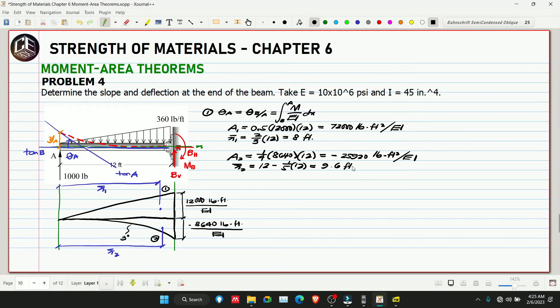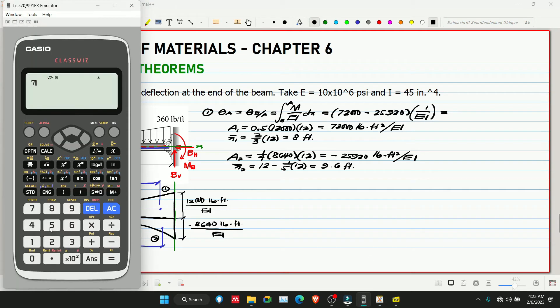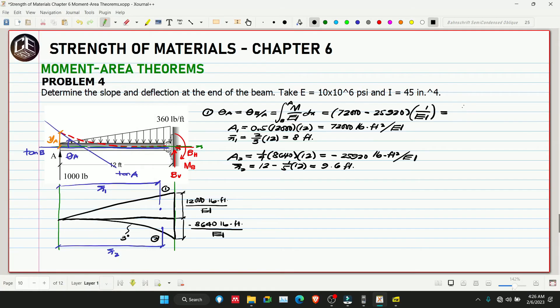So theta A is the combined areas only. This is 72,000 minus 25,920 multiplied by 1 over EI. So we get positive 46,080 pound-feet squared over EI.